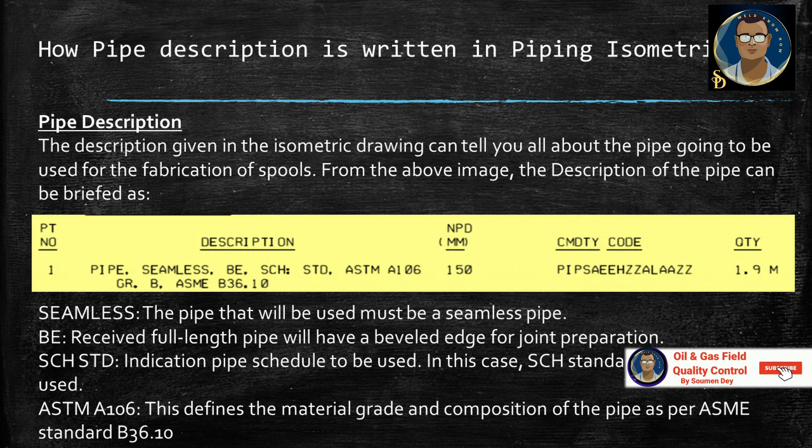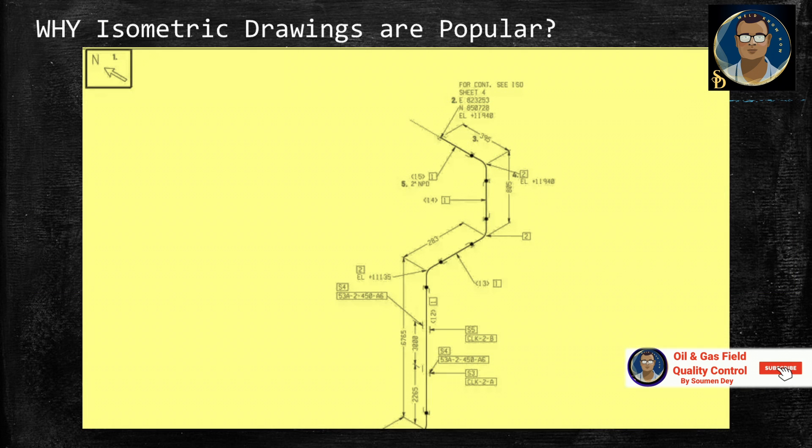Let us have the description: Seamless means the pipe that will be used must be a seamless pipe. BE means received full length pipe will have a beveled edge for joint preparation. Schedule standard means the pipe schedule to be used, in this case is standard schedule. ASTM A106 defines the material grade and composition of the pipe as per ASME standard B36.10.